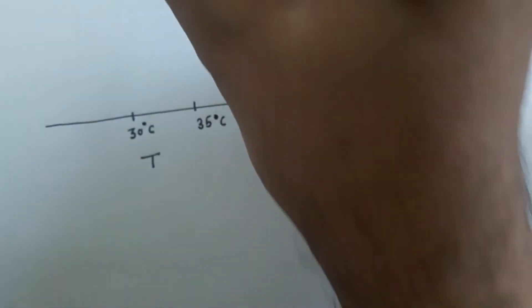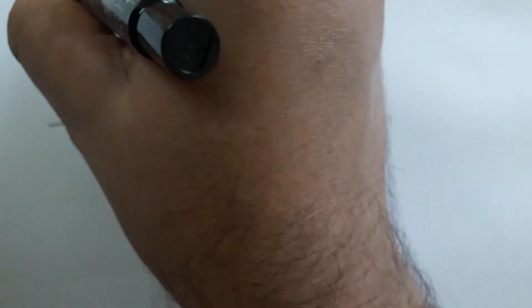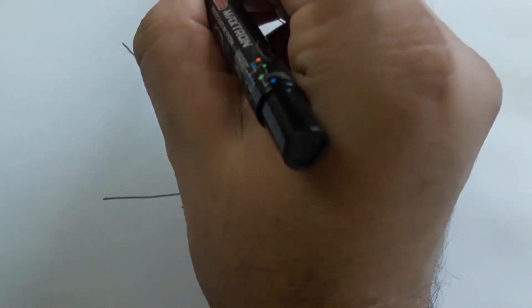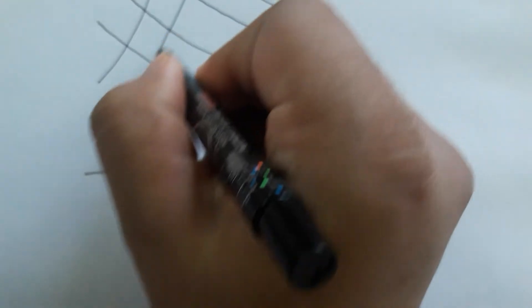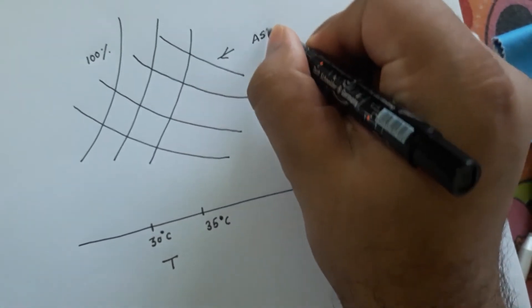So in the psychrometric chart you have adiabatic saturation lines like this and also you are having percentage saturation lines given like this. This is 100% saturation line and these are basically adiabatic saturation lines.